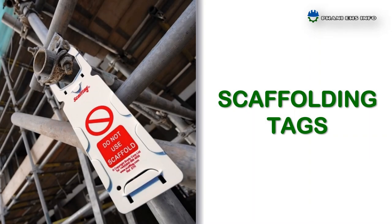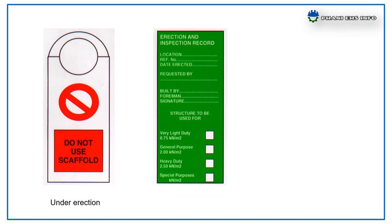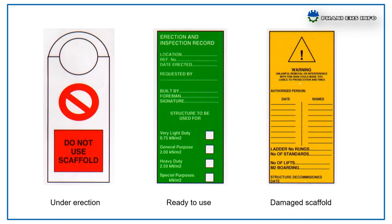What is a scaff tag or scaffolding tag? There are three types of scaff tags or scaffolding tags. The red tag means the scaffolding is under erection, so do not use the scaffolding. The green tag means the scaffolding is ready to use. And the yellow tag indicates damage of the scaffold.